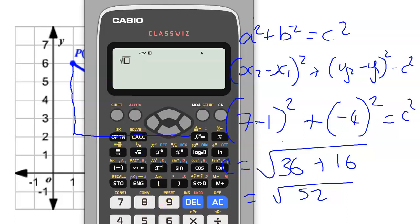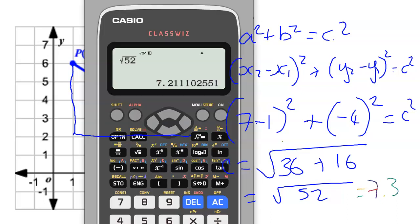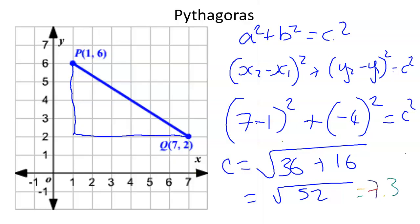We can type that in: the square root of 52 equals, and press the SD button or the change button, and the answer is 7.21. If in doubt, use three significant figures.